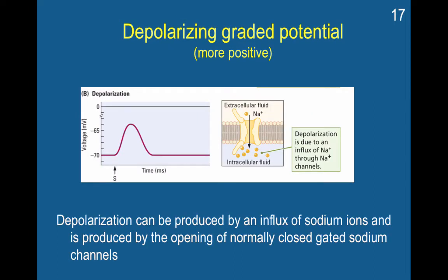Depolarization can be produced by an influx of sodium ions and is produced by the opening of normally closed, gated sodium channels. The cell would be stimulated through a neurotransmitter, causing sodium channels to open. Once these sodium channels open, they let positive sodium into the cell. This causes a big bump in the positivity of the cell — it becomes less negative. Once part of the cell becomes less negative, these sodium channels are voltage sensitive, so subtle increases in positivity can cause more sodium channels to open, letting more sodium enter the cell, making the inside more positive than the outside. Once the cell becomes sufficiently positive, an action potential begins.